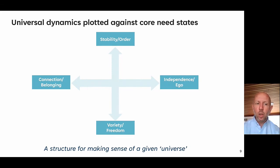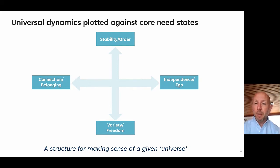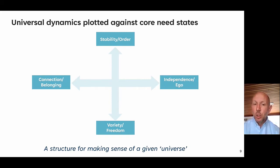Likewise, going left to right, we also have a need for connection, belonging, feeling part of something — all the way through to, on the other extreme, a need for independence, significance, or ego. Broadly speaking, we'll have a preference for one over the other, so all of us will sit somewhere on this map. We can use this as a structure for making sense of a given universe — in our context, a given category or industry — to identify where our audience sits and what needs we should be playing to as a brand.